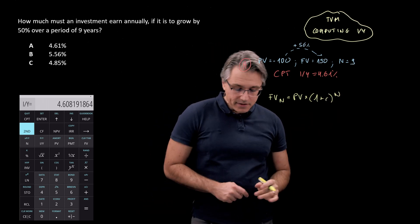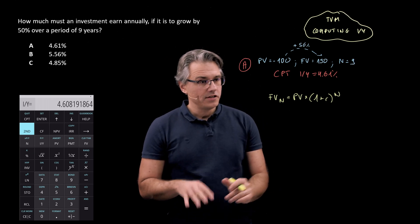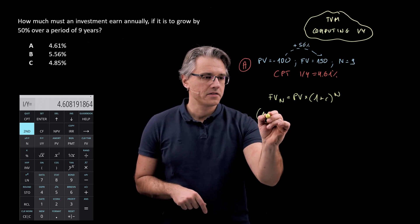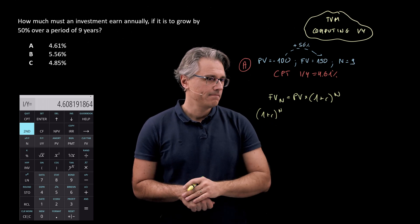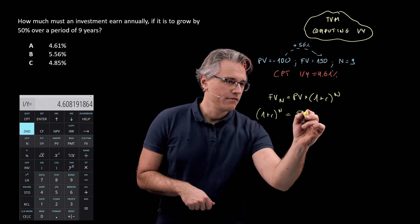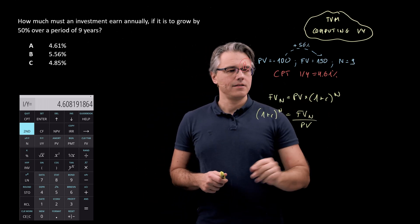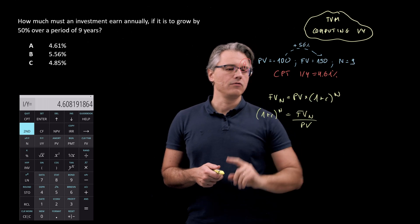And we can easily get R from this. What we need to do is say, 1 plus R to the power of N equals FVN divided by PV. So I basically change the sides, flip the sides, and then I just kept this term on one side.